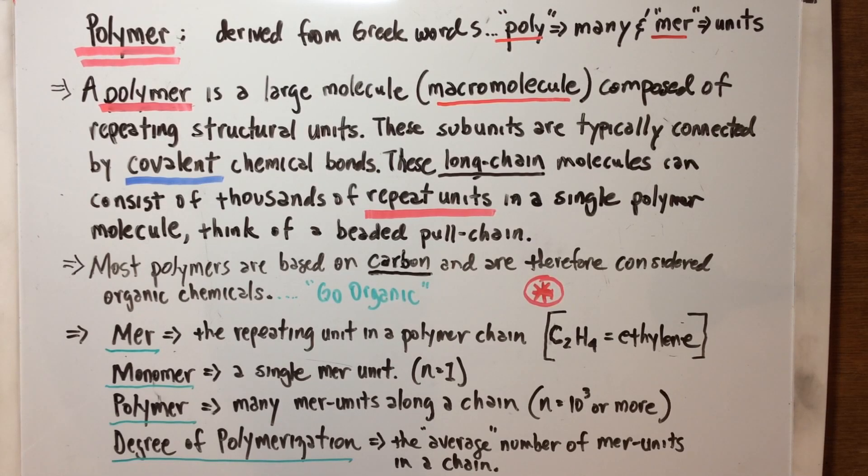These subunits are typically connected bonded together through covalent chemical bonds, through the sharing of electrons. As you recall, a covalent bond is about sharing electrons. These long chain molecules can consist of thousands upon thousands of repeat units in a single polymer molecule. Think of perhaps a big large string of beads or maybe one of these beaded pull chains that you see on ceiling fans, but imagine one just being 100 yards long or something, and that being just one molecule because they're connected on upon a chain upon a chain, repeating units.